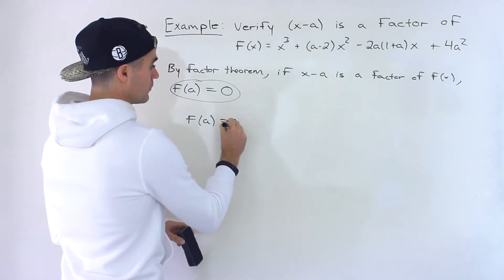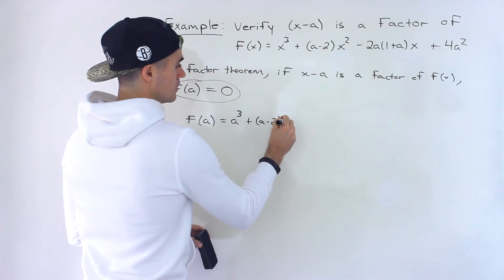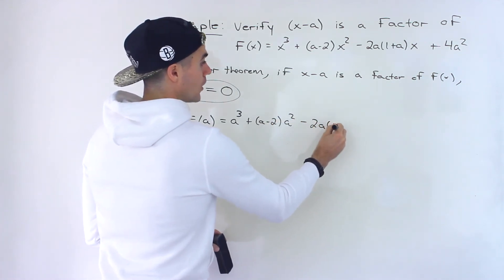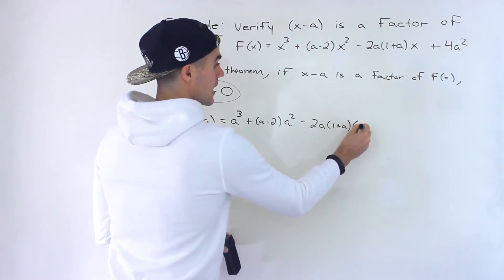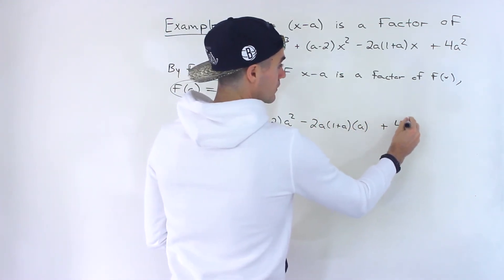So we would end up with a to the power of three plus a minus two, a squared minus two a, one plus a times another a for that x, and then we have a plus four a squared.